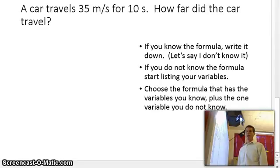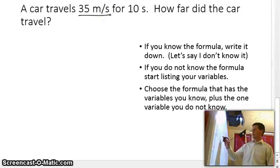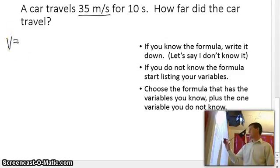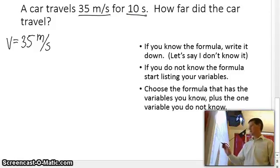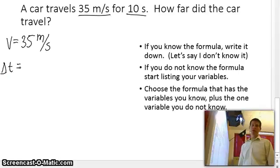I'm going to start by writing down information that I know. So let's say I don't know the formula, but I do know that it's going 35 meters per second. So I know that's a velocity. So my velocity is 35 meters per second. And I've got another number here, it's 10 seconds. Well, I know that's a time. And it's asking me for a distance.